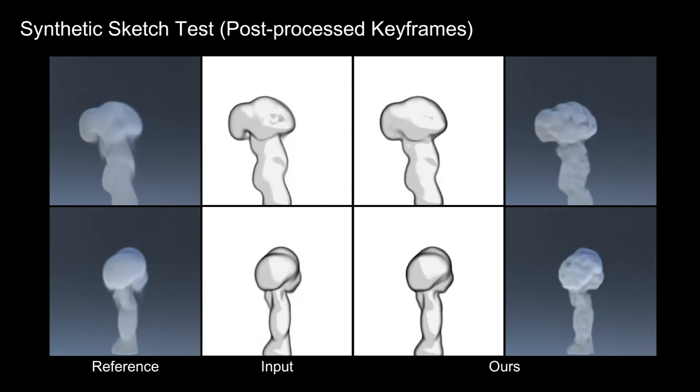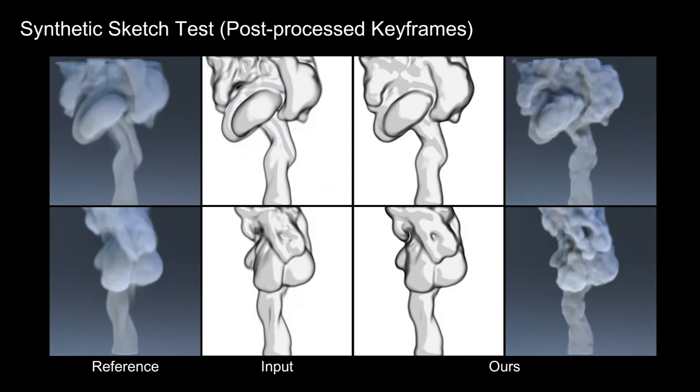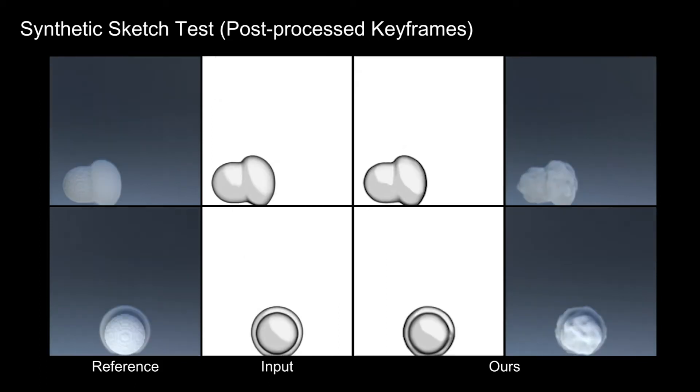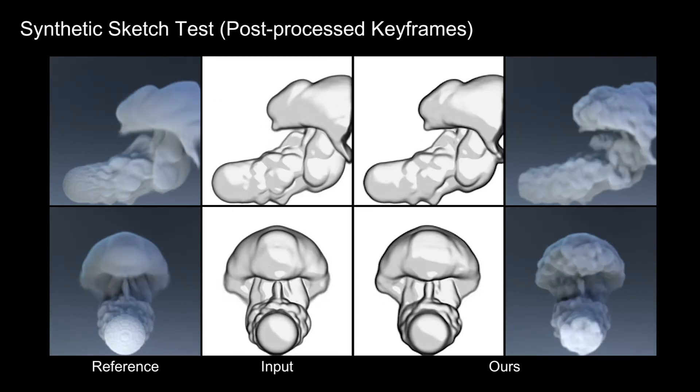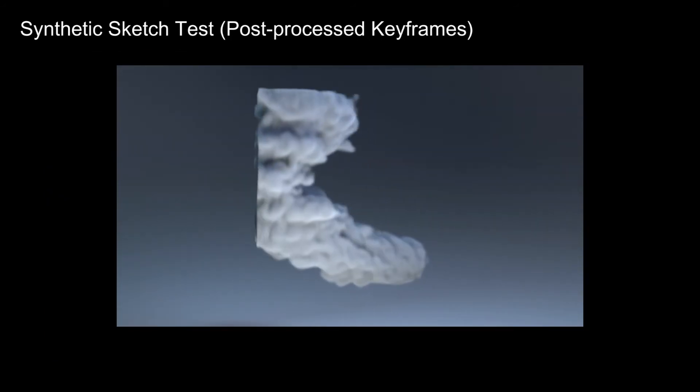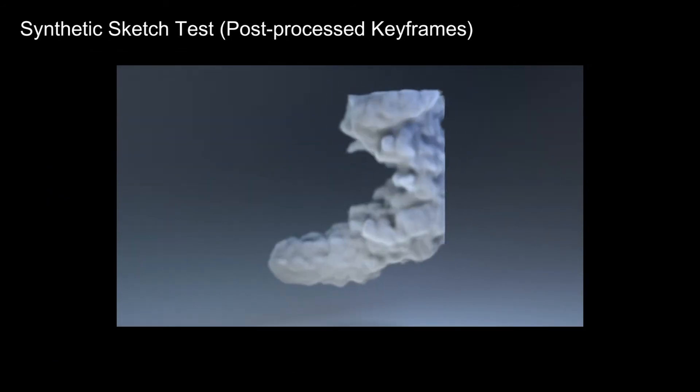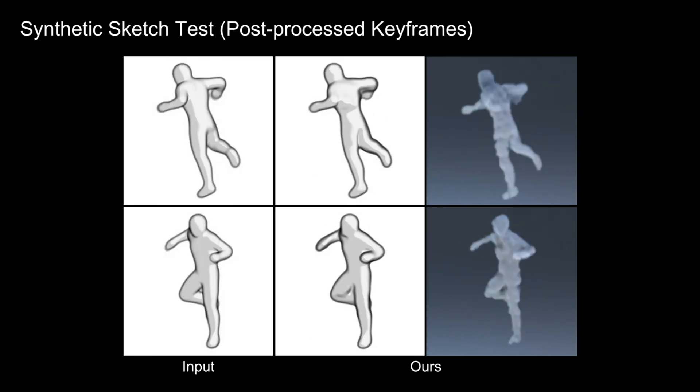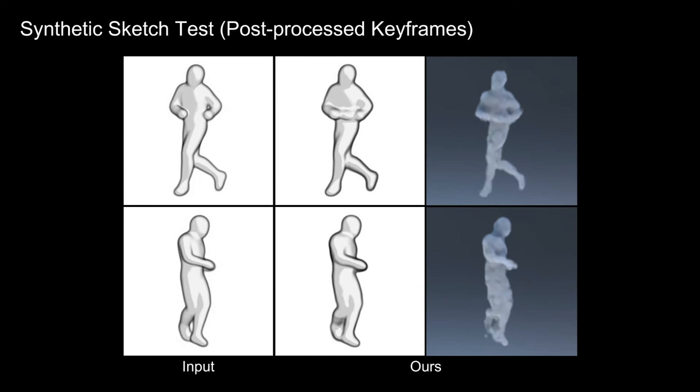We tested our method on several synthetic examples that were not part of the training dataset. We show results on physically simulated smoke. We additionally show results on non-physical animation inputs such as character animation and procedurally generated clouds.